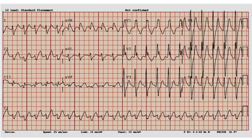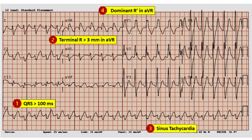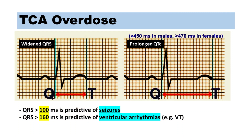ECG is crucial in the prompt diagnosis of TCA poisoning. The degree of QRS widening on ECG is correlated with adverse events. QRS greater than 100 milliseconds is predictive of seizures. QRS greater than 160 milliseconds is predictive of ventricular arrhythmias, such as ventricular tachycardia.